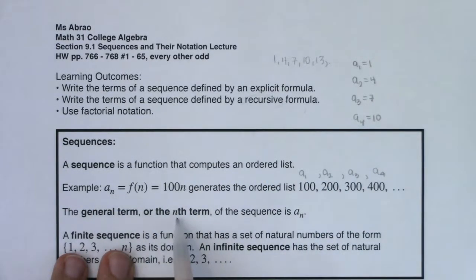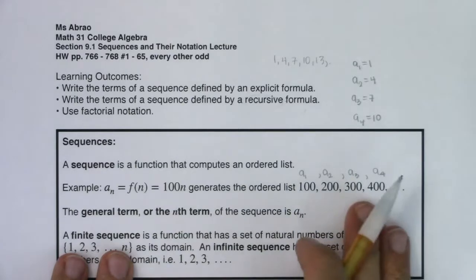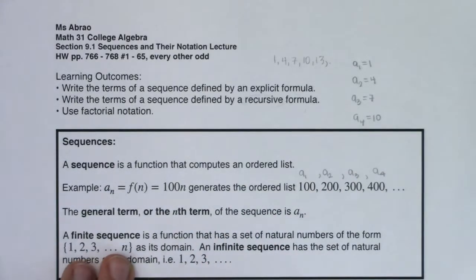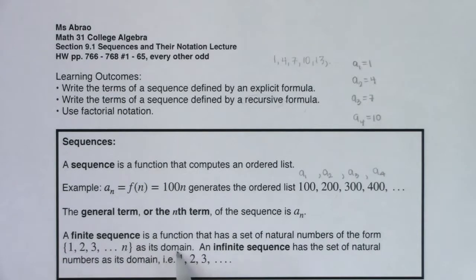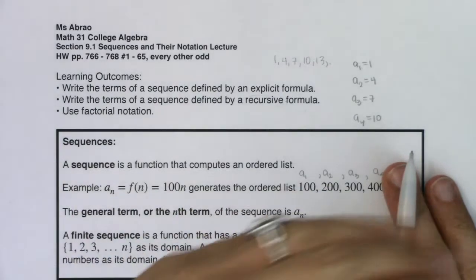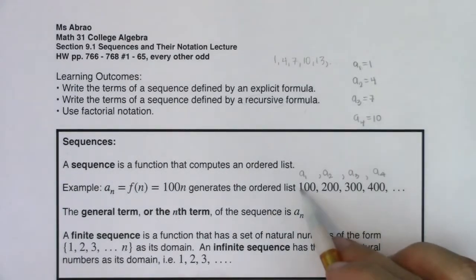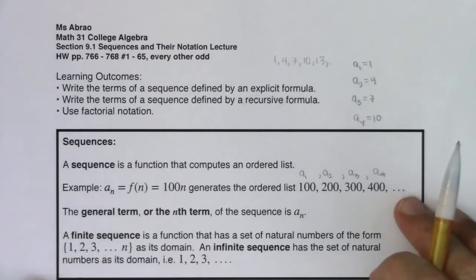The general term, or more commonly the nth term, of the sequence is a sub n. That subscript tells you the position in your ordered list. A finite sequence is a function that has a set of natural numbers in the form 1, 2, 3, ..., n as its domain. An infinite sequence means we just keep going on forever. If you ever see dot dot dot, that means it can go on forever.